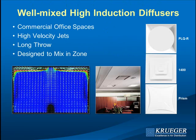Most commercial office spaces use what we call well-mixed high-induction diffusers. A high-velocity jet travels along the ceiling with a fairly long throw. The goal is to mix the room air so the space achieves uniform temperature at fairly low velocity, taking advantage of Coanda to keep the jet on the ceiling. The PLQ-R is probably the most effective diffuser we sell, followed by the PLQ with a square pattern, and then the 1400 and the Prism, which are also very effective across all ranges of airflow.